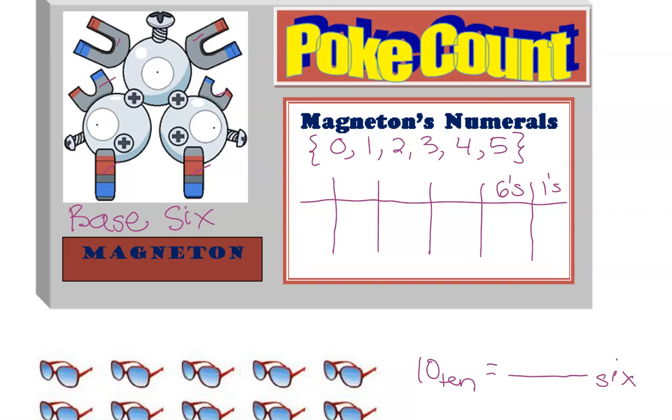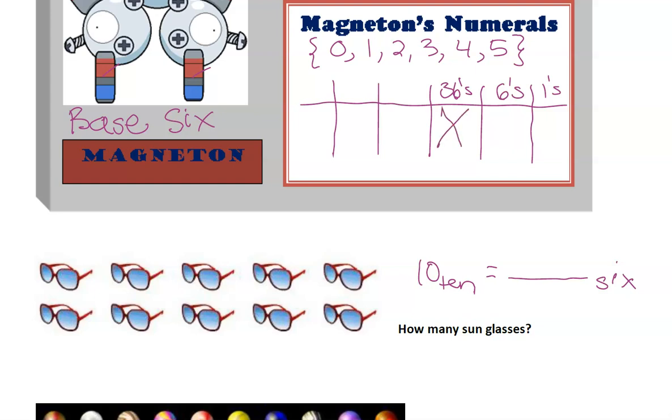The third place value will take six groups of 6, which would be 36. And then the fourth place value would be six groups of 36. I'm not sure what six groups of 36 is. Whatever that will be, that's too many. We don't need that for the number of glasses here. We only have ten glasses, so we're not going to go there. How many 6's are there in 10? Well, we know 10 can be broken into 6 and 4. One group of 6 and how many left over? Four singles. So 10 in base 10 is the same as one group of 6 and four singles in base 6. So we will write 1 4 in base 6.